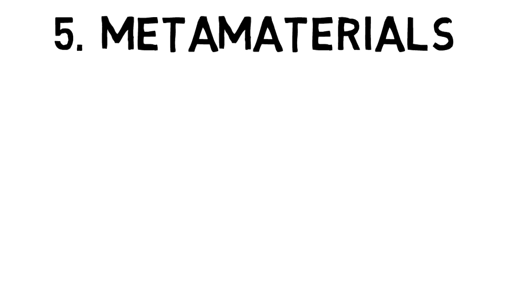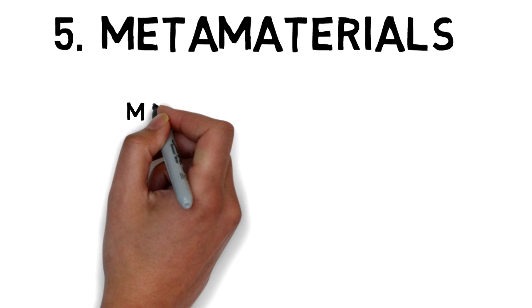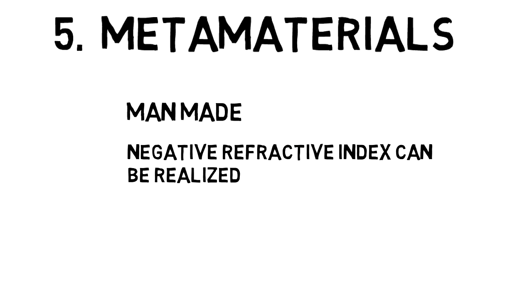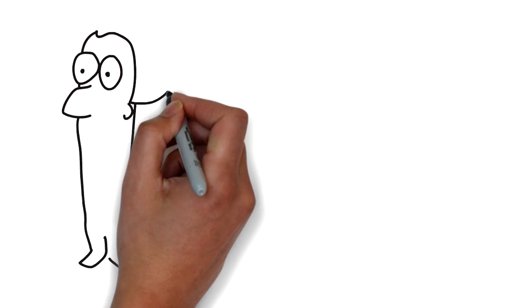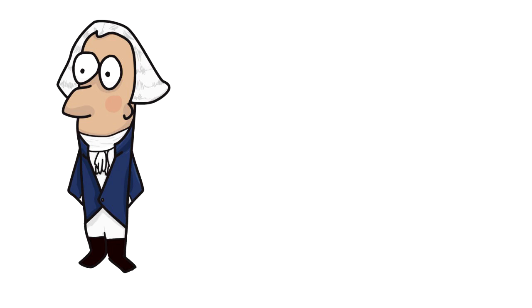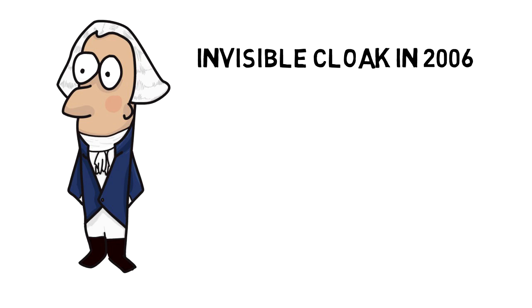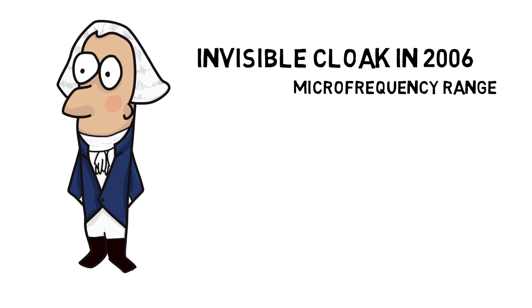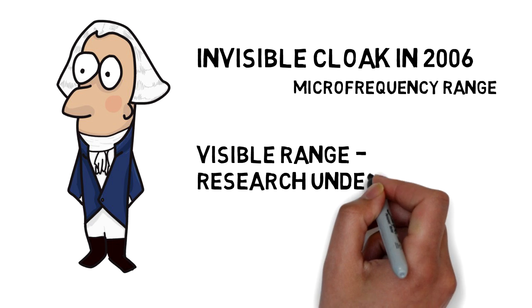Fifth way: using metamaterials. Metamaterials are man-made materials that have properties which go far beyond the natural materials. For example, a metamaterial with negative refractive index can be realized. Scientists were able to realize an invisible cloak for the first time in 2006, but it was only at microwave frequency range. Work on achieving similar results in the visible range is still under progress.